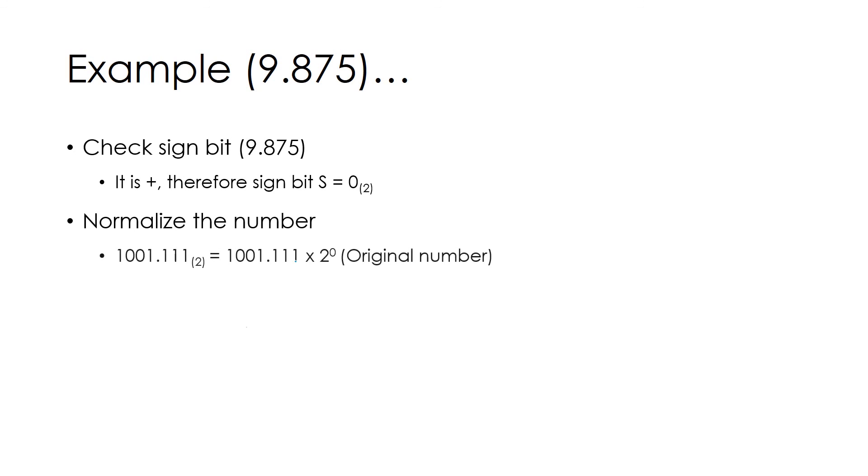Next step is to normalize the number by shifting the bits. This is the original number. Notice the decimal point is shifted to the left as shown here. After shifting the number 2 places, after shifting the number 3 places.